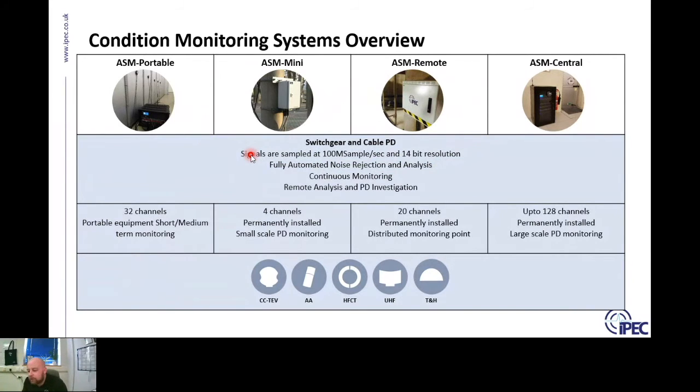So we do that in two phases. Phase one is that acquisition - 100 mega samples per second, 14-bit resolution. So that digital data, we've got a lot of data for every individual channel detected by the HFCT sensor.